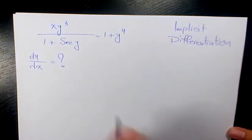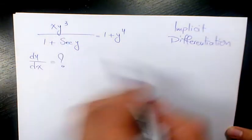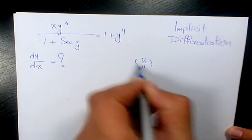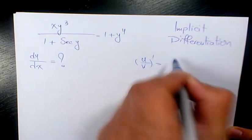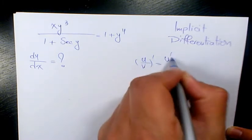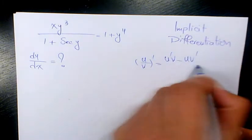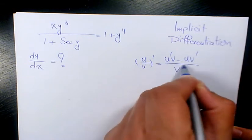So what we can do is apply the quotient rule: the derivative of u over v is going to be u prime v minus u v prime, divided by v squared.